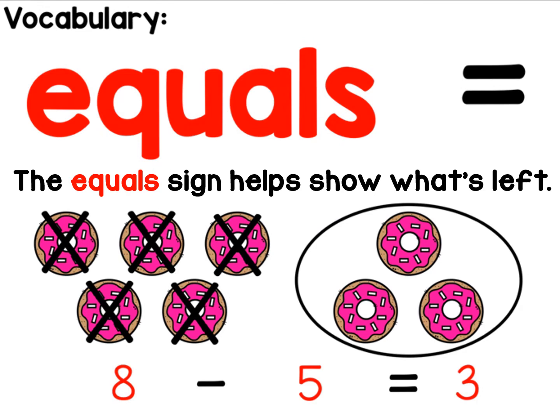Equals. The equal sign helps show what's left. Equals also means the same as. If you look at the bottom number sentence, it says eight minus five equals three. That means we started with eight, we took away five, and now we have three left.